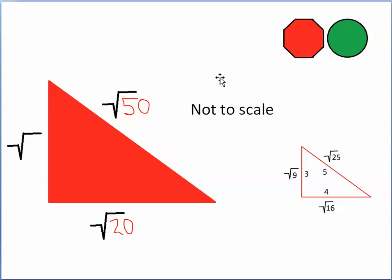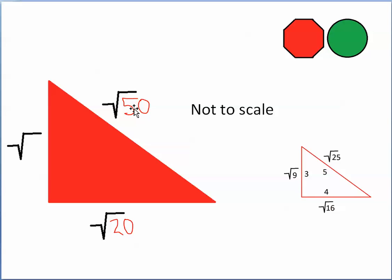Here's another problem. The diagram says 'not to scale' — that red triangle is just to give you an idea that we're dealing with a right triangle. You can't measure it; pay attention to the math. The numbers are what are important. The number 25 minus the number 16 gives us 9; similarly, the number 50 minus 20 gives us 30. The square root of 30 is approximately 5.47 correct to two decimal places.